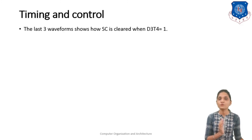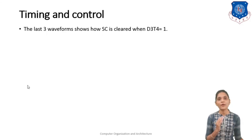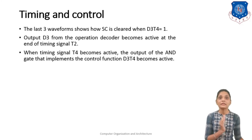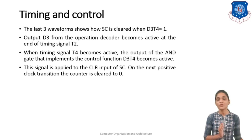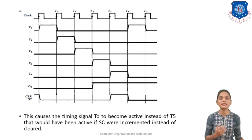The last three waveforms show how SC is cleared when D3·T4 is 1. The output of D3 from the operation decoder becomes active at the end of timing signal T2. When timing signal T4 becomes active, the output of the AND gate implementing the control function D3·T4 becomes activated, and this signal is applied to the clear input of the SC. On the next positive clock transition the counter is cleared to 0, causing timing signal T0 to become activated instead of T5, which would have been activated if SC were incremented instead of cleared.